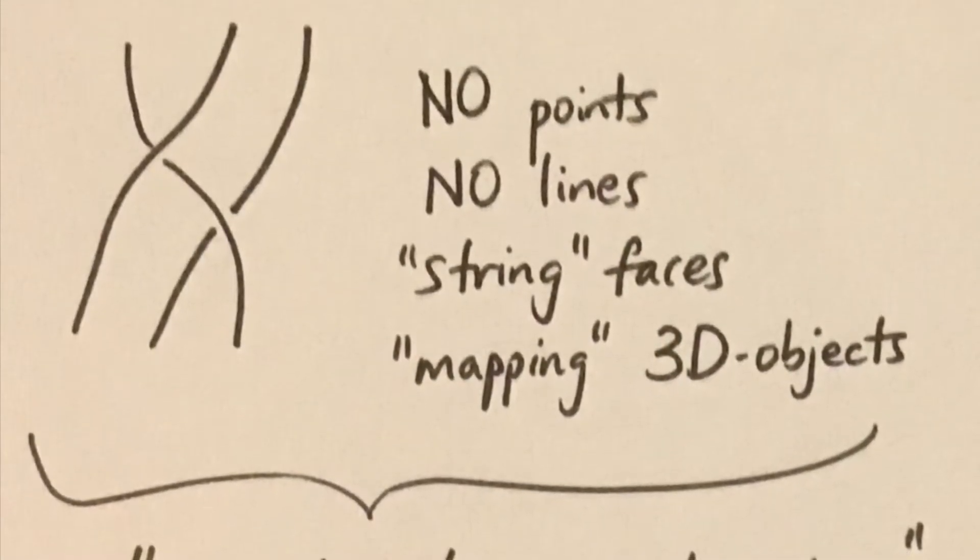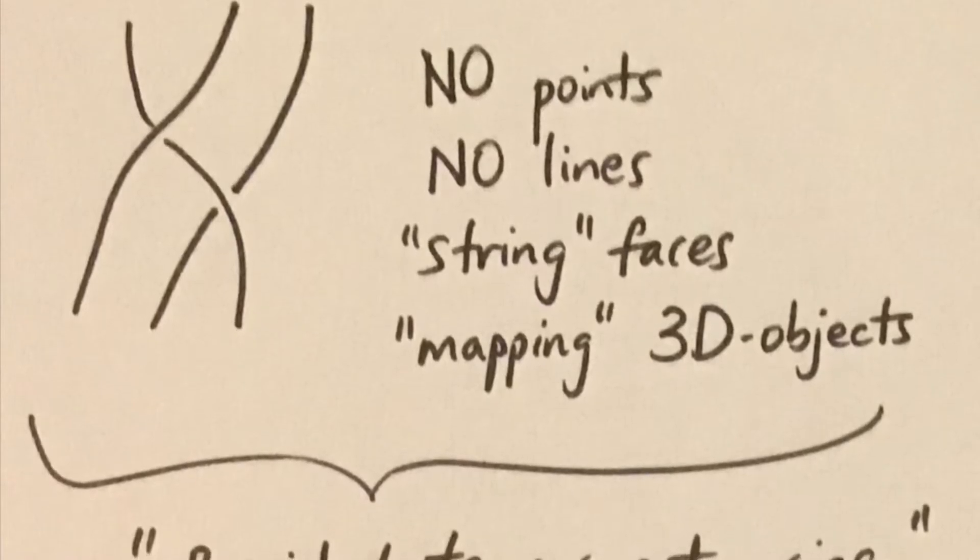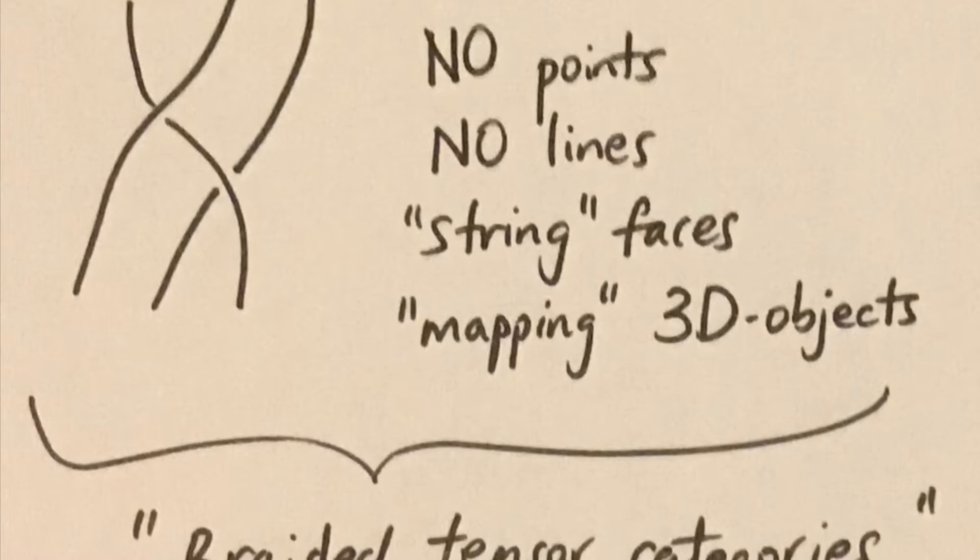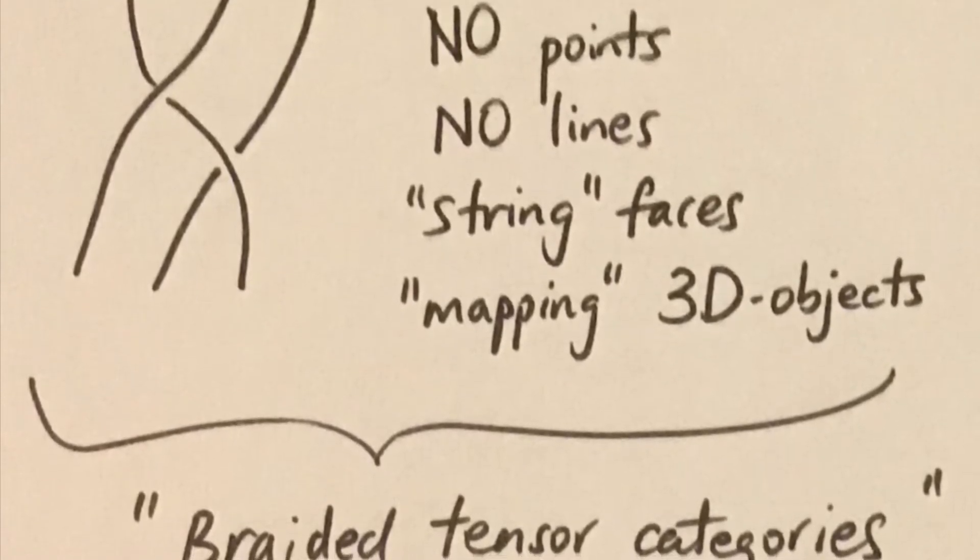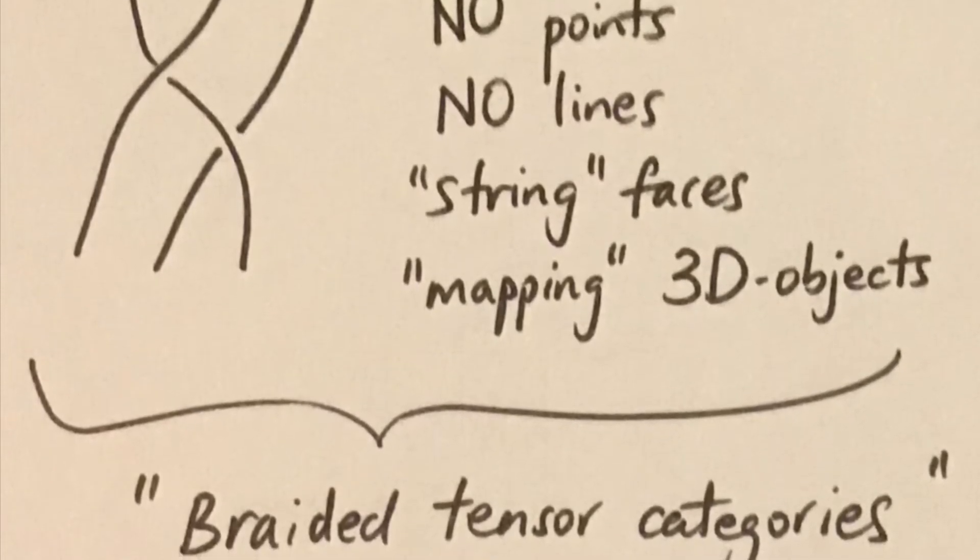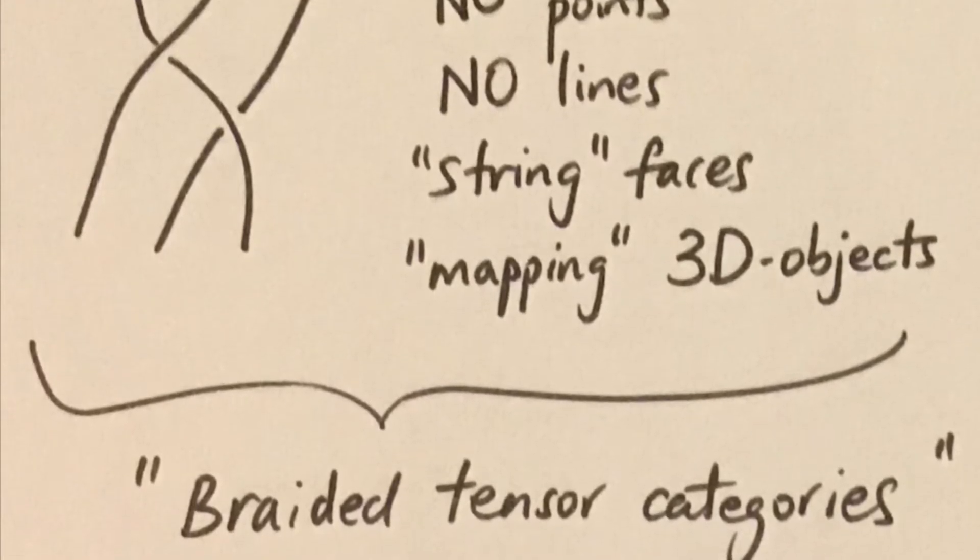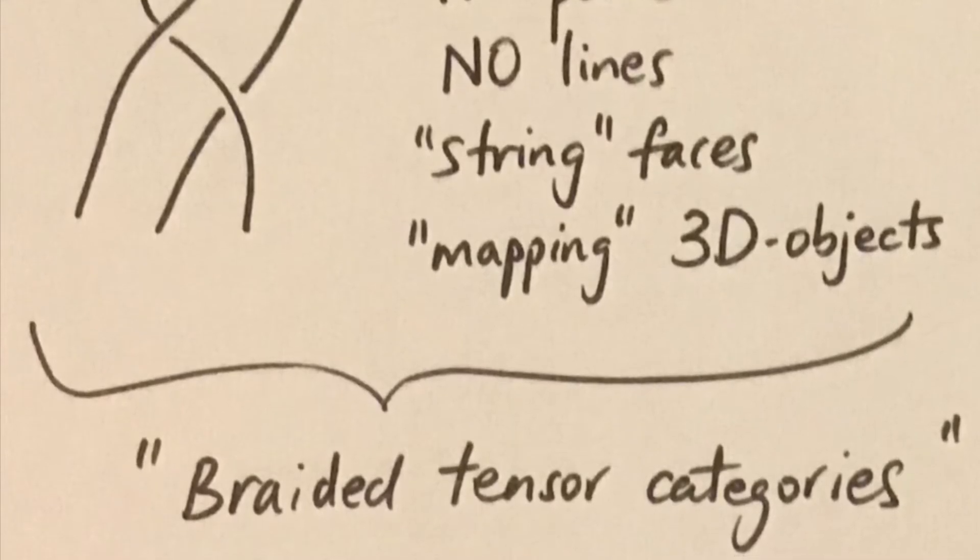Now we think of the braids as dual pictures to things built out of little triangles in every dimension. And we see that we have no points and no lines. Because all we're drawing are points and lines. And we think of these lines or strings as faces in the original geometry. And the maps, which is where funny things happen like braids crossing, as 3 dimensional objects in the original geometry.